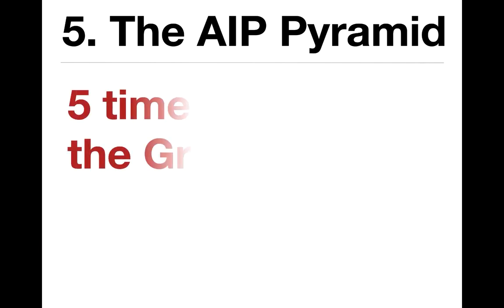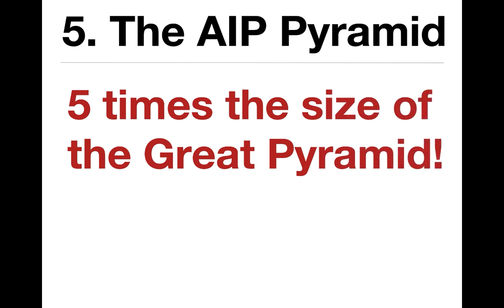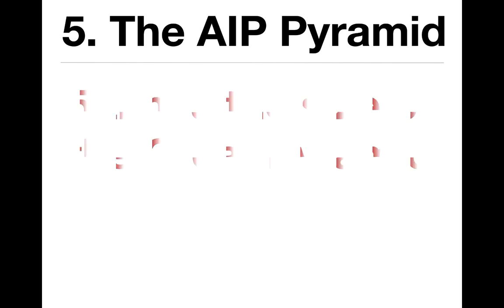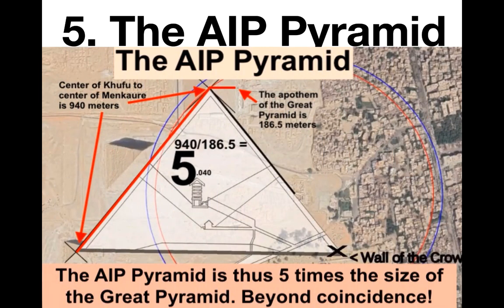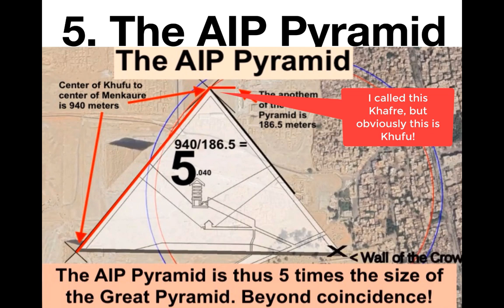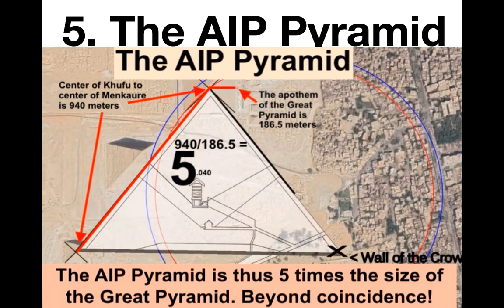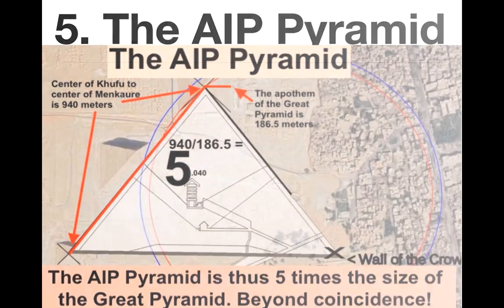Here's a fifth unified plan, independent of all the others. I'm calling it the AIP pyramid, because we work with it the most. It's five times the size of the Great Pyramid — Sacred Geometry Decoded pointed that out to me. The apex is the very center of Khafre, the bottom-left vertex is the very center of Menkara, and the third vertex is near the Wall of the Crow. When you take that pyramid, it measures 940 meters from that red line, with an apothem of 186.5 meters matching the Great Pyramid. This on-the-ground Giza pyramid form is five times the size of the Great Pyramid — that's a fifth unified plan.